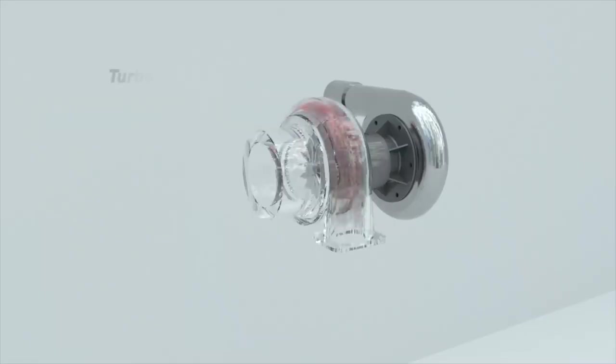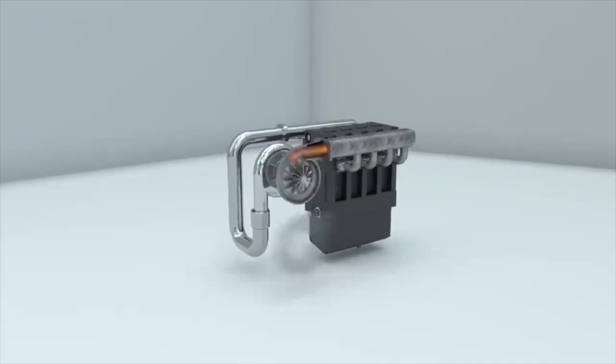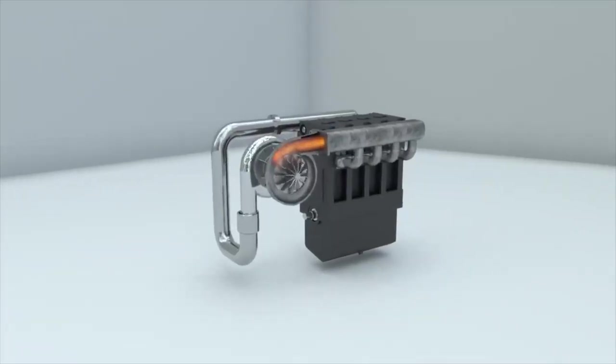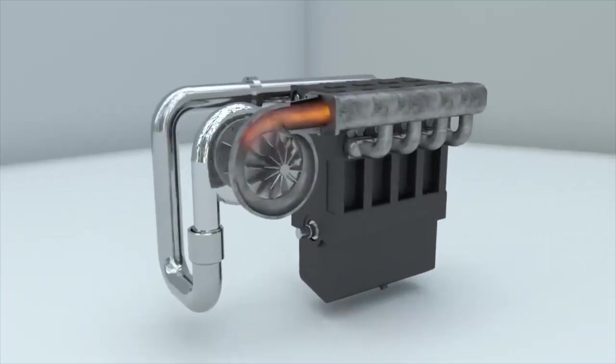The second way is called turbocharging. It is based on the utilization of residual energy from the exhaust gas flow. For this energy to be used, a turbine is necessary. Inside a turbine, the opposite happens. The moving gas causes the wheel to rotate.